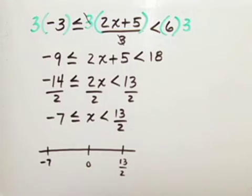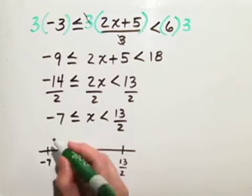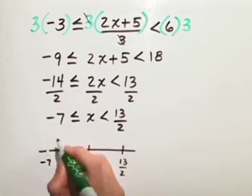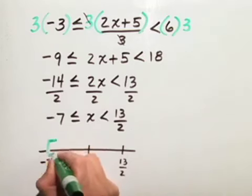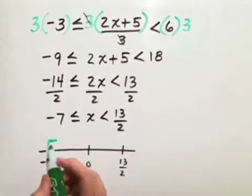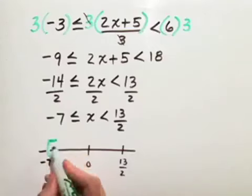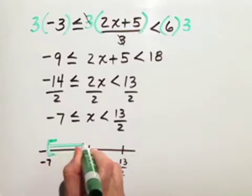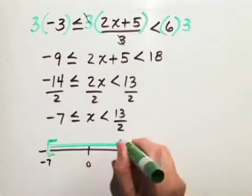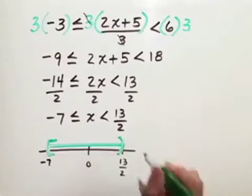We want to have x isolated in here such that negative 7 is less than or equal to x, so we want numbers going to the right, up to but not including 13 halves.